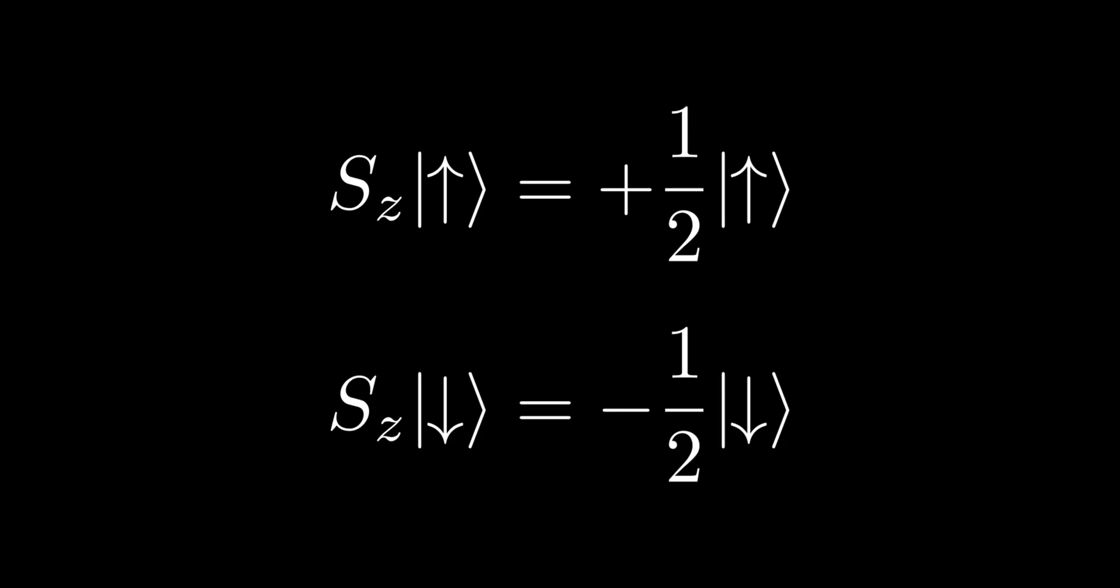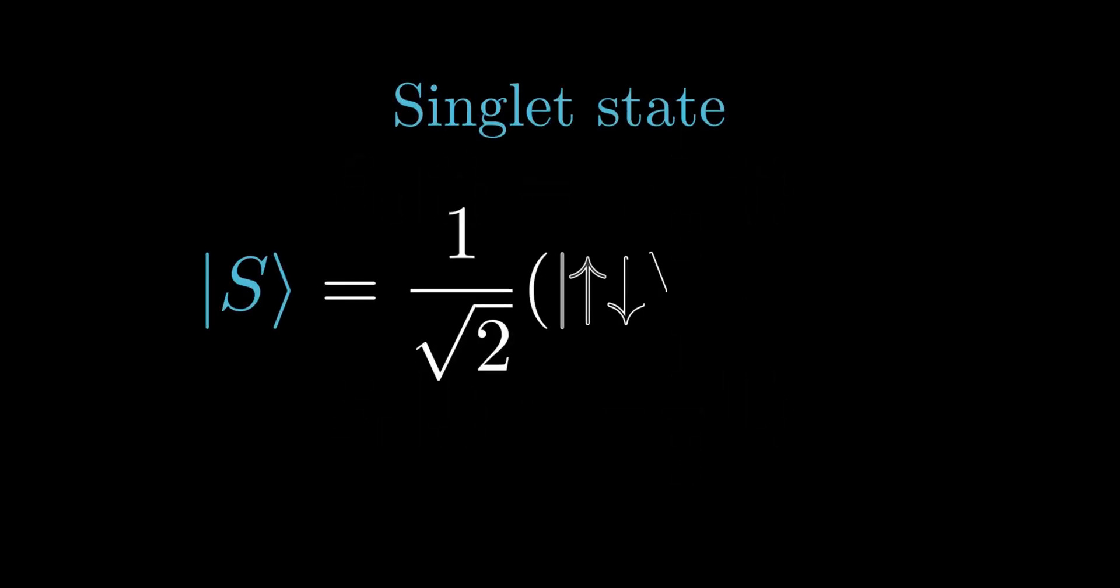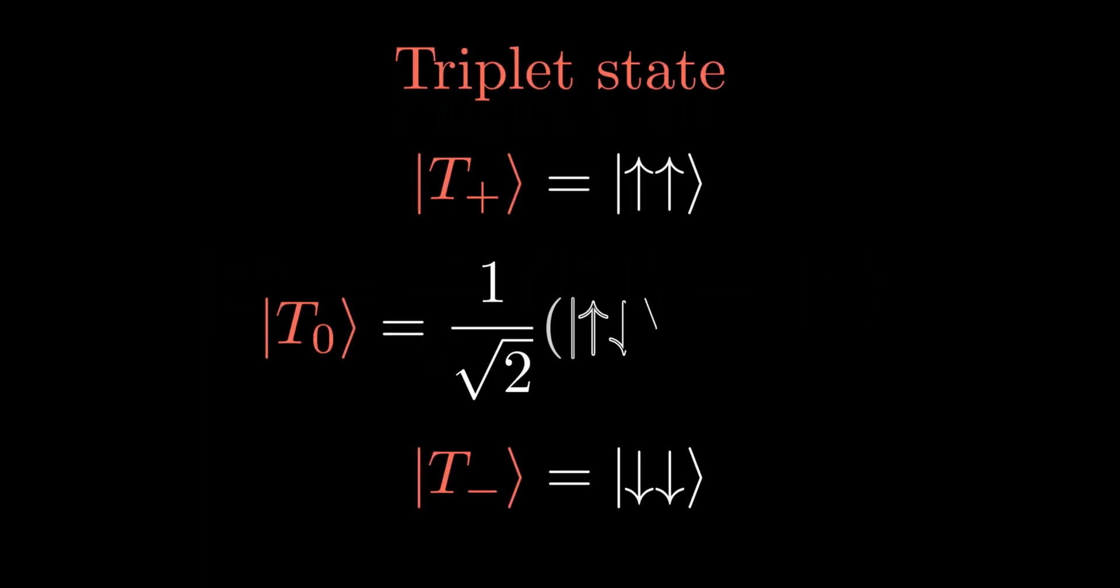When two electrons are spin paired, the spins cancel out, resulting in a singlet state which has no magnetic moment. When the spins are unpaired, the electrons form a triplet state, named because there are three ways the spins can be arranged. The state has twice the magnetic moment of a single electron.